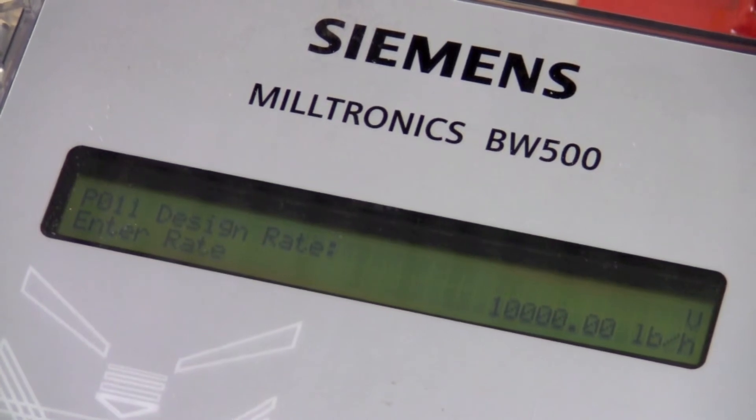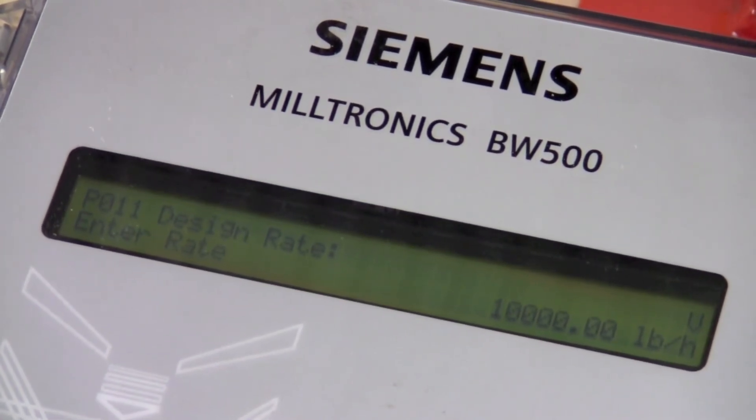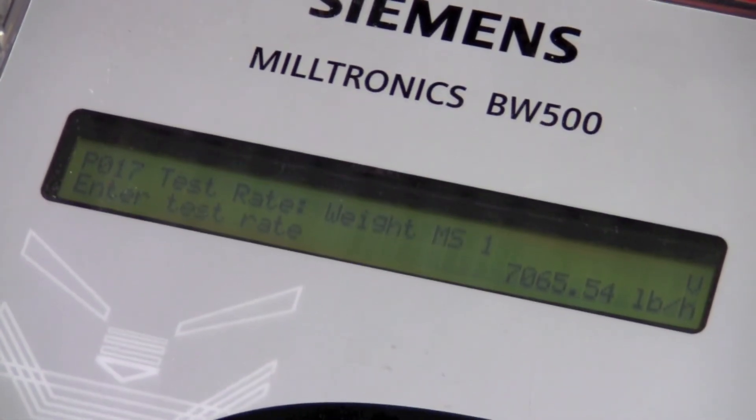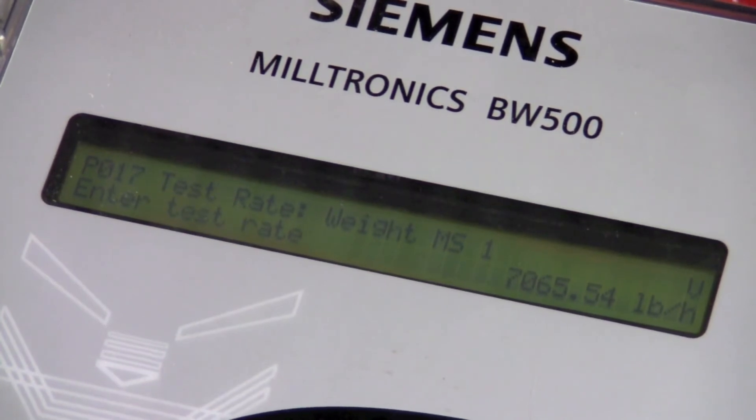Parameter 11 is your design rate. That is the rate at which your system is built from. Design rate is your nominal flow rate for your process. Once you know your design rate, you also need to come up with your test rate. Your test rate is 60 to 80 percent of your design rate. The test rate is also what your calibration weights are based from. Please see the following diagram.